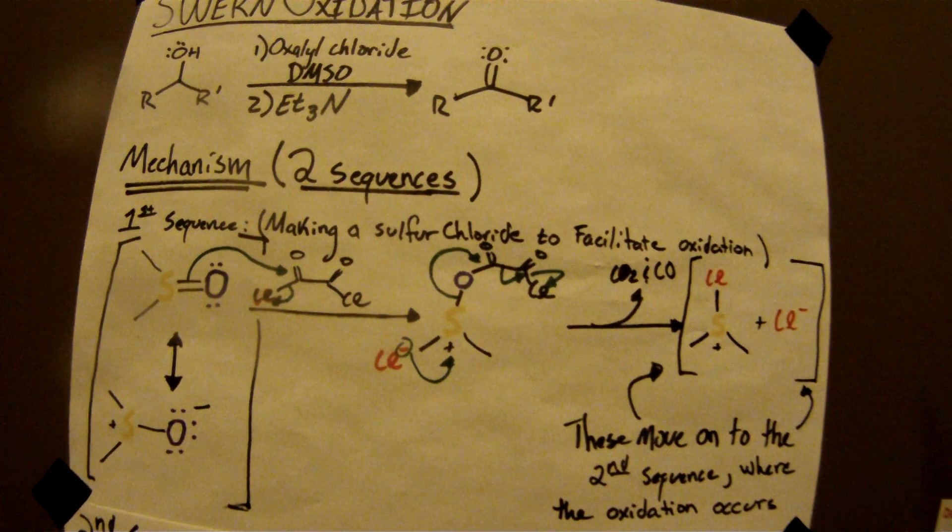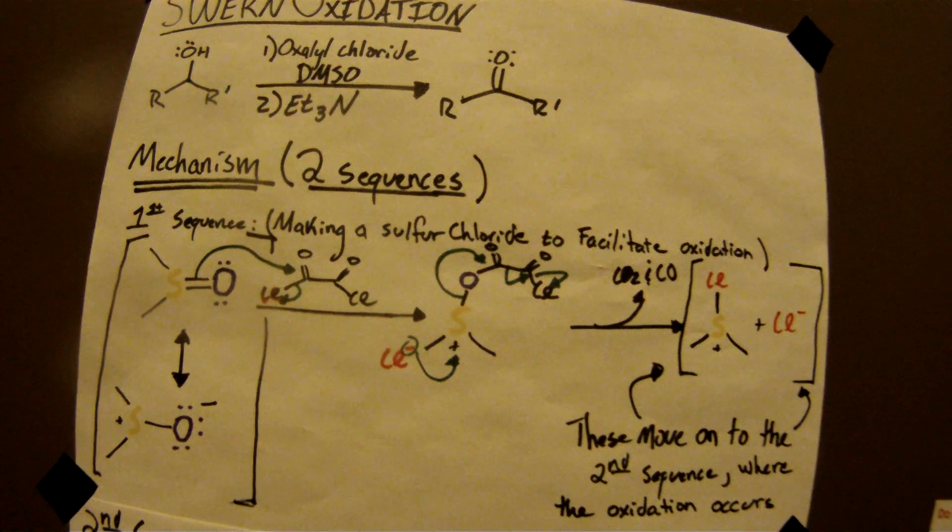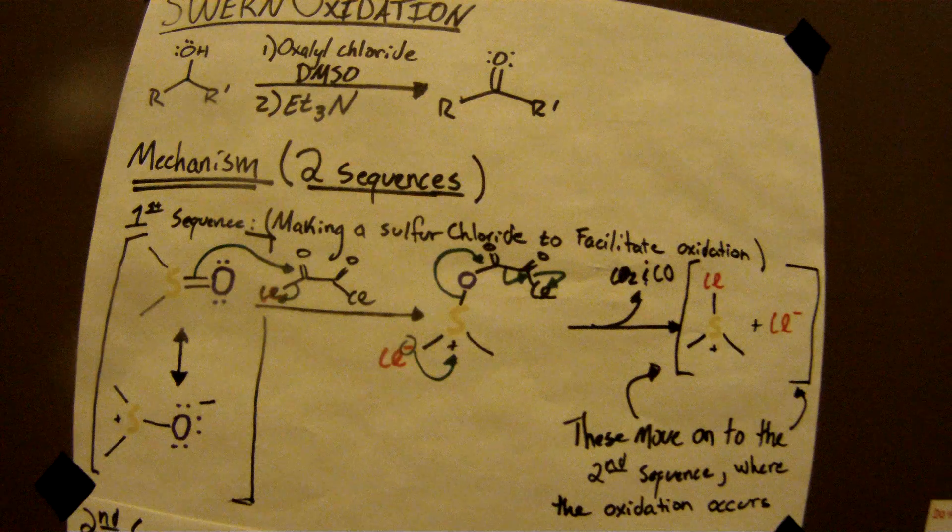Alright, so here we have the Swern oxidation. Here's the simple reaction up here. You use oxalyl chloride, DMSO, and a strong base, usually trimethylamine.